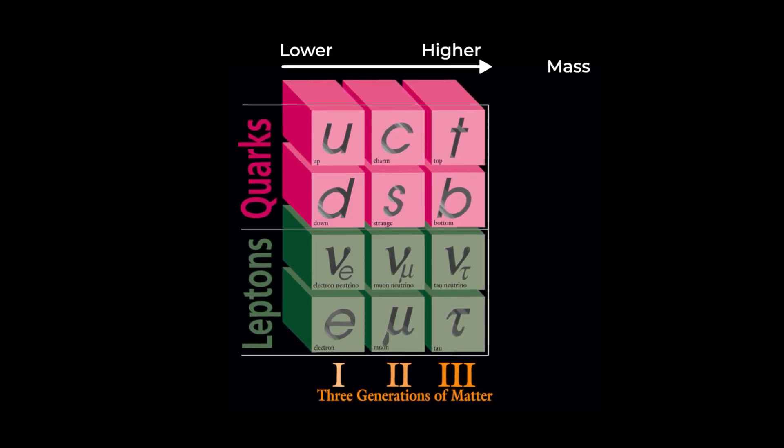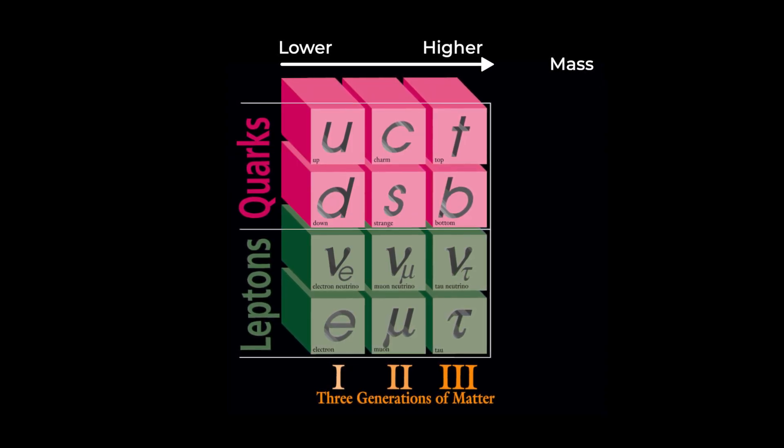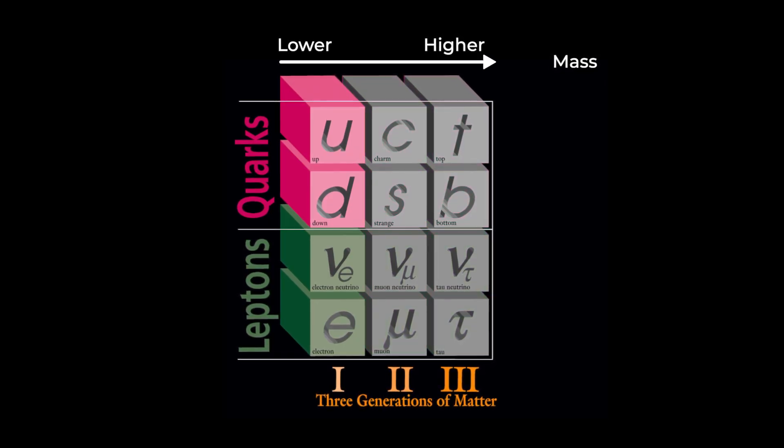These columns tell their own story. The leftmost column contains the building blocks of ordinary atoms. The second and third columns are carbon copies of column one, but the particles are unstable and not ordinarily found in nature. Physicists call the columns generations, and the simple fact is that we don't know why there are multiple generations. We don't know why the quarks and leptons have the charges that they do.